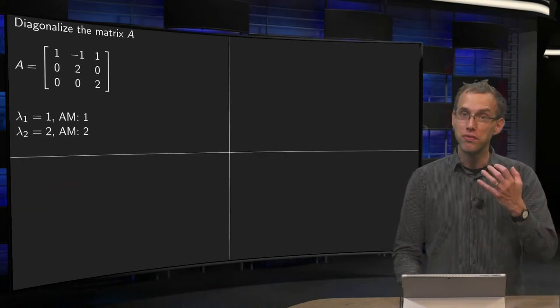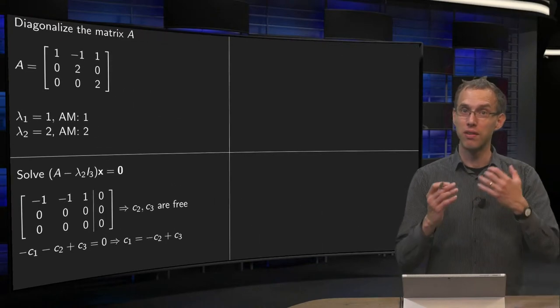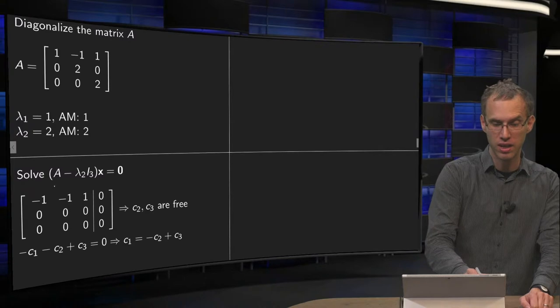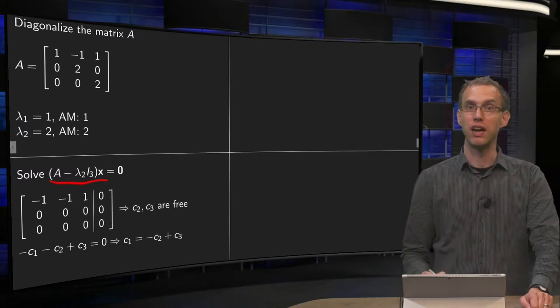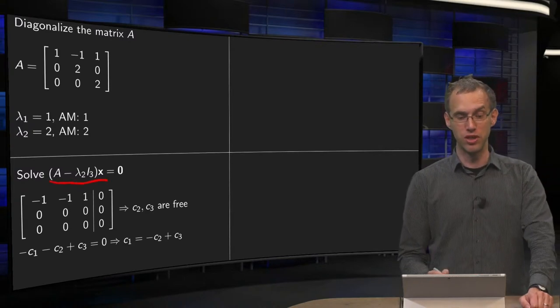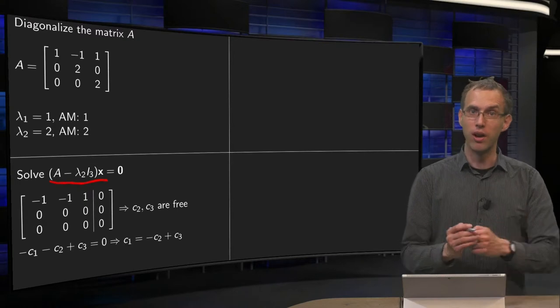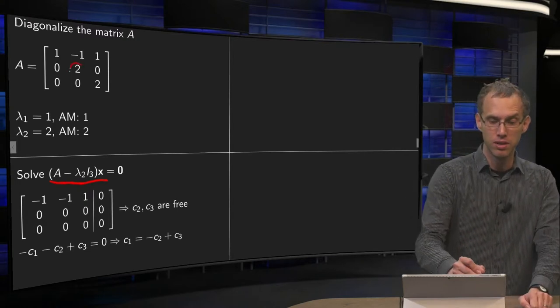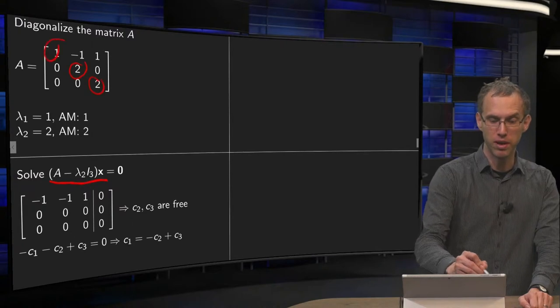Let us focus on the second eigenvalue, see whether we can find a basis for the eigenspace. So we solve the equation A minus 2 times I3 times x equals 0. Computing A minus 2 times I3 is easy. These 2's become 0 and this becomes a minus 1.